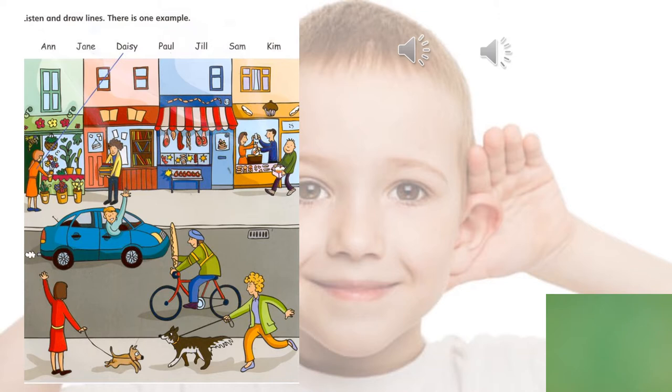Hello. That's a nice picture. It's a picture of the street in my village. It's very good. Can you tell me the names of all the people? Yes, okay. Well, the woman who works in the flower shop is Daisy. Oh yes, she's picking up some flowers. Can you see the line? This is an example. Now you listen and draw lines.